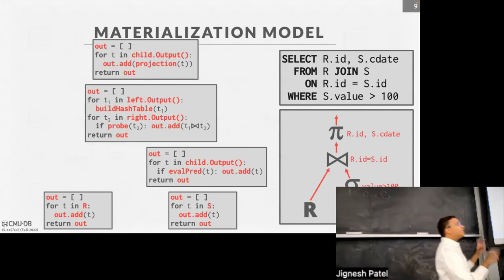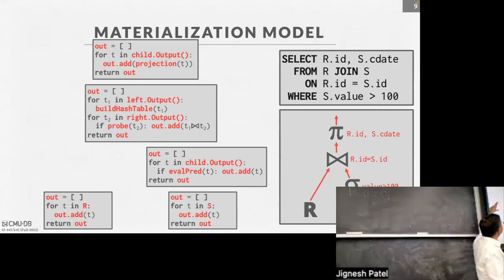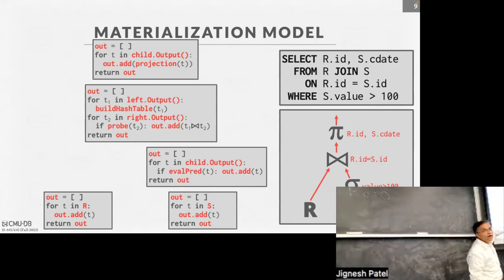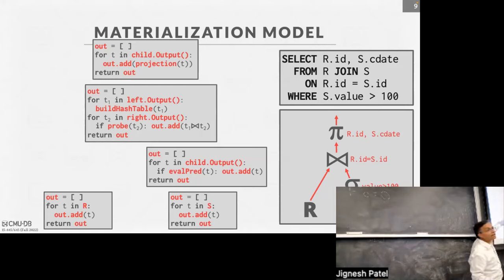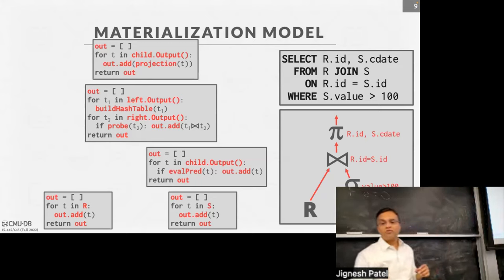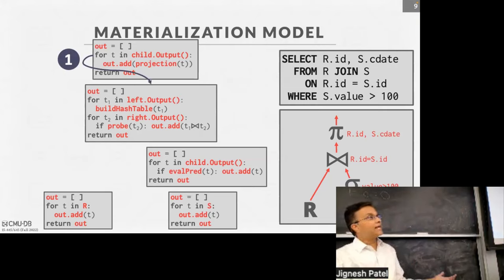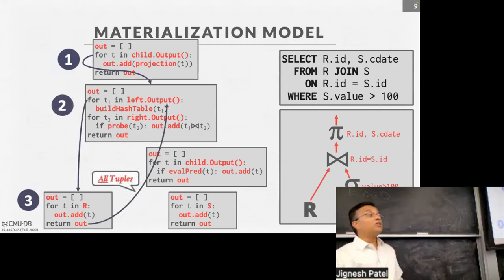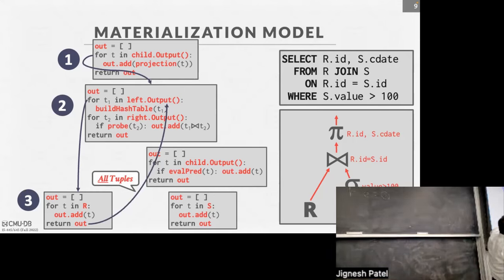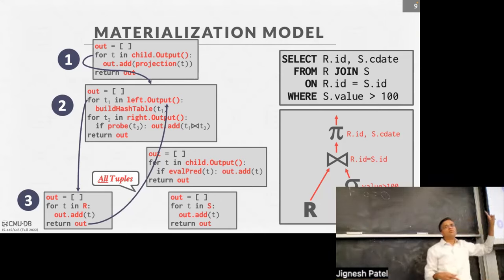The flow is the same: set things up, call the operator once, it returns all records. That loop runs once per query, not once per record. Hash join is a blocking operator — it needs to see everything from one side before doing anything else. Unlike a selection that can stream through without blocking, hash join, sorting, and aggregates are naturally blocking — they have to see all or most of the input before emitting anything to their parent.